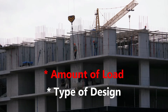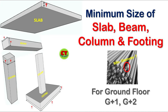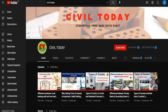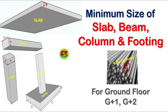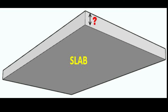In this video, we will discuss the minimum size of structural elements to be used in building construction based on IS code provisions and experience. If you are new to my channel, please like, share, and subscribe to Civil Today. First, we will see the minimum size of structural elements — slab, beam, column, and footing.